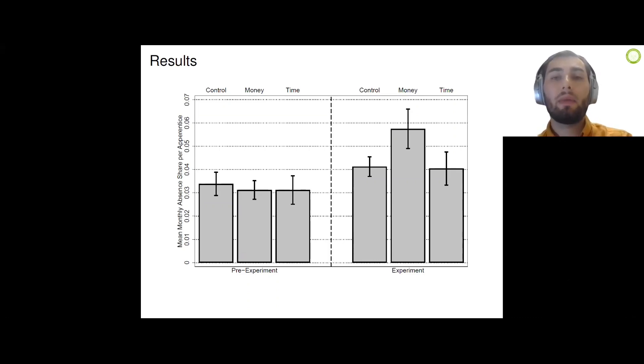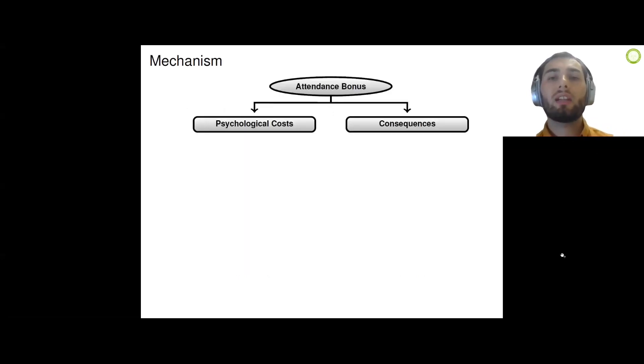Our more refined estimation results are qualitatively identical to these descriptive results. While the result is interesting on its own, we seek to understand the mechanism. For this purpose, we have designed a post-experimental survey in order to evaluate different mechanisms suggested in the literature. We distinguish between two broadly defined mechanisms. In the interest of time, I want to be rather brief and spare from the details.